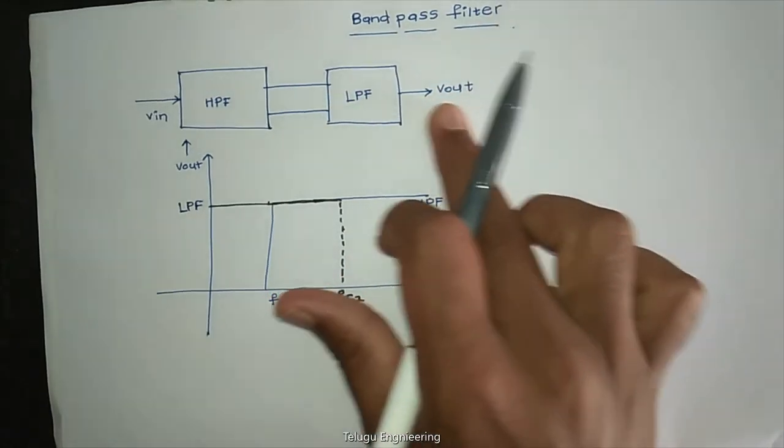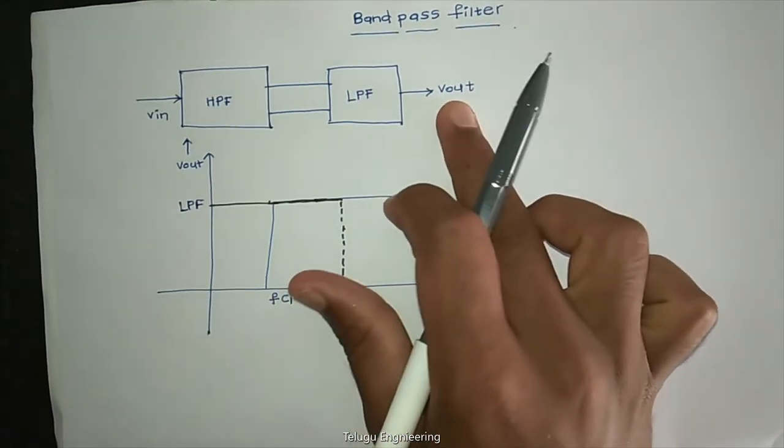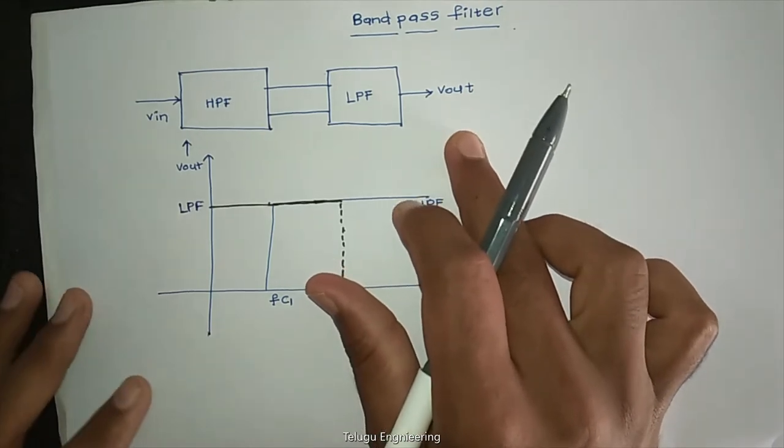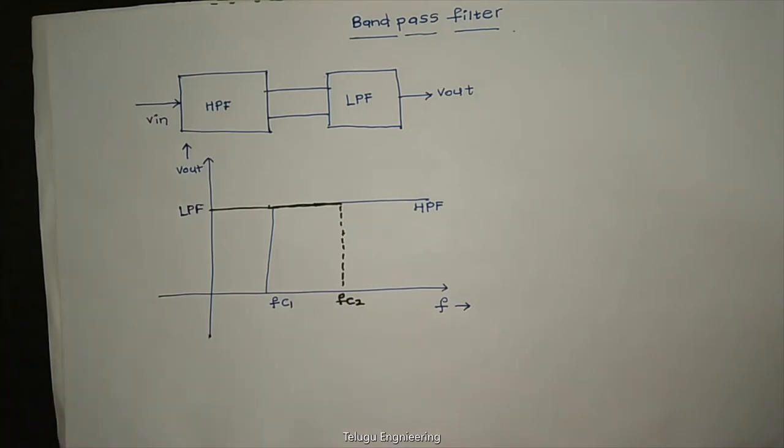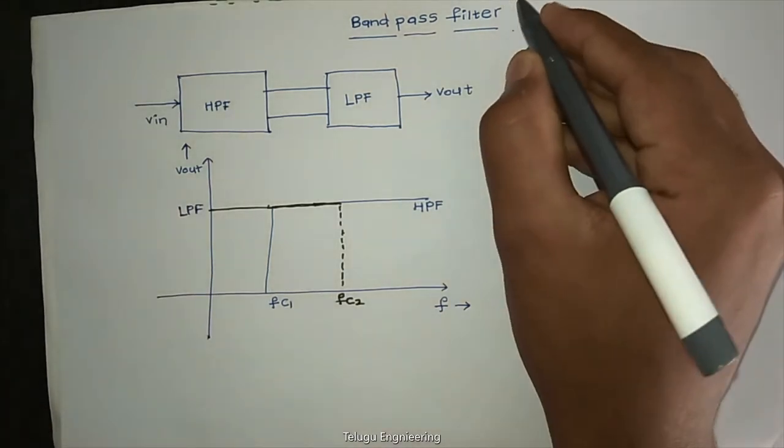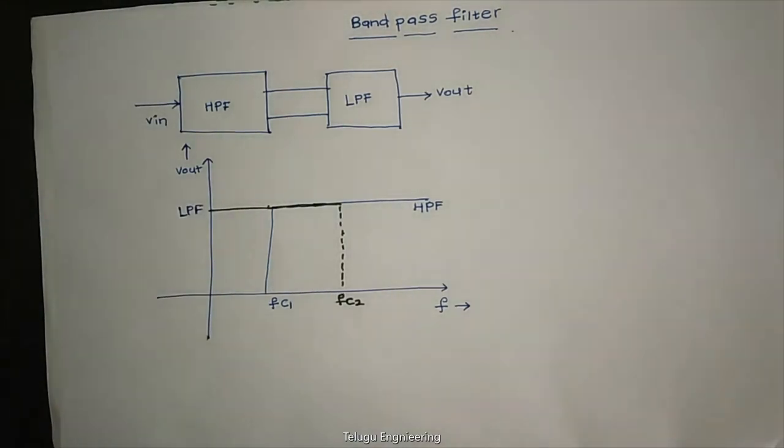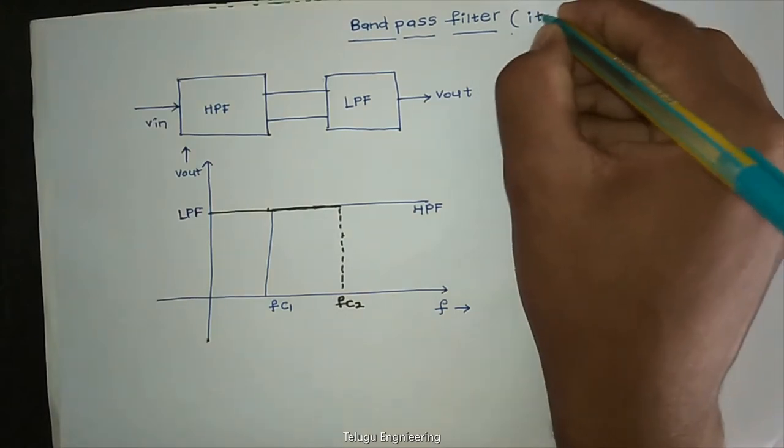And we will take the output, the original output, across the low pass filter. So, we know that band pass filter allows only particular frequencies.